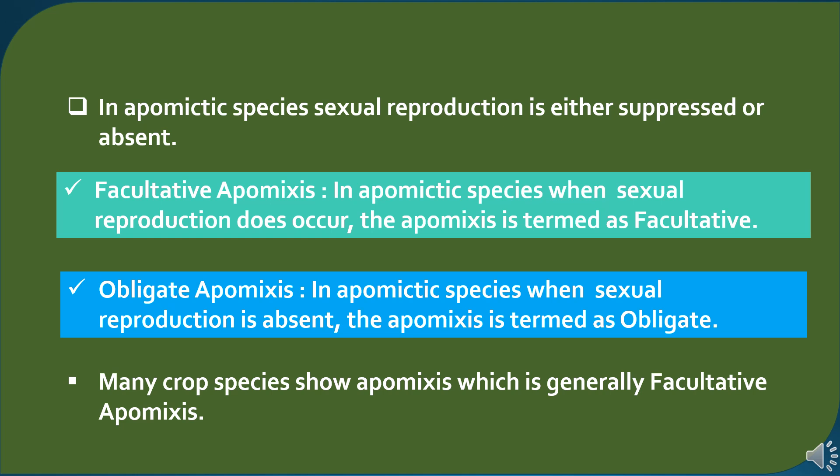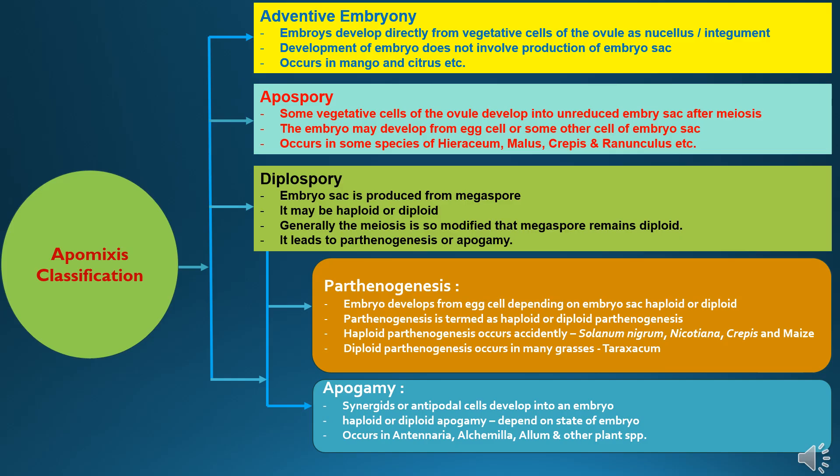In many crop species, facultative apomixis is reported. Apomixis is classified into three types: first is adventive embryony, second is apospory, and third is diplospory.